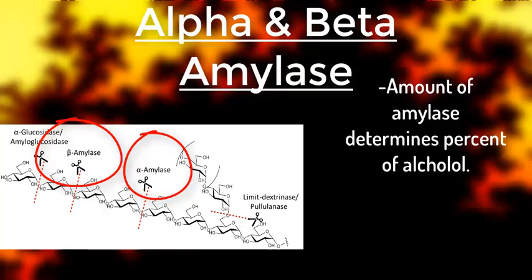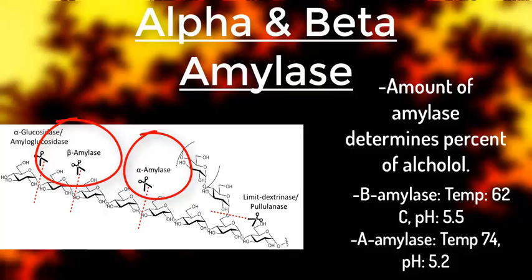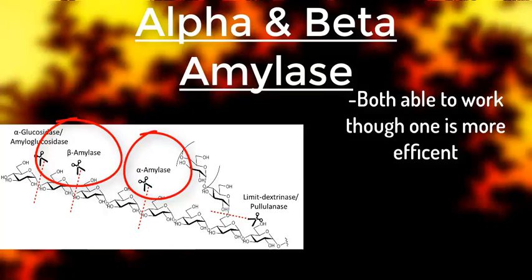With the two amylase enzymes, alpha and beta, they both require different temperatures to function optimally. The optimum temperature and pH for beta amylase is roughly 62 degrees Celsius and pH 5.5, while alpha amylase is roughly 74 degrees Celsius and pH 5.2. Since they are used at the same time, they are both able to work, but depending on the set temperatures the company uses, one will be more efficient than the other. Here is a quick summary of what alpha and beta amylase can do — pause the video if you need to write this down.